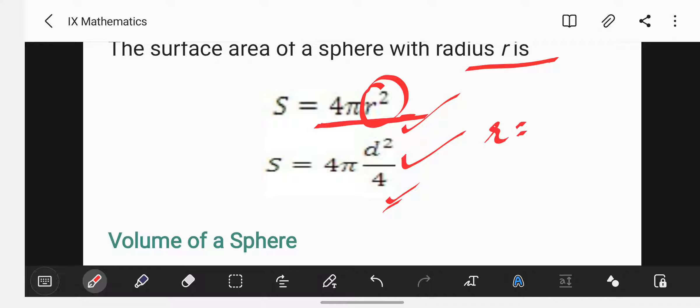And if radius is given, you can use the first one that is 4πr². As you know that r is nothing but d/2. So if you place d/2 in place of r in the first equation, 4π, then d/2 whole square, you'll get the result.